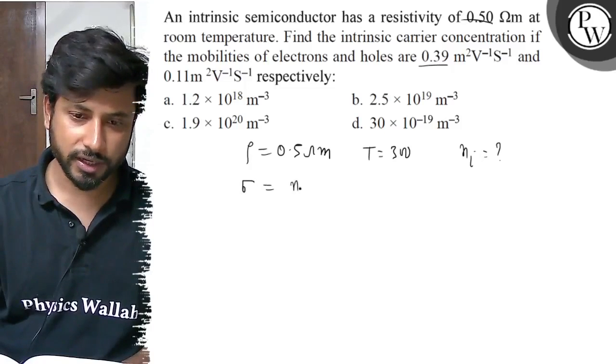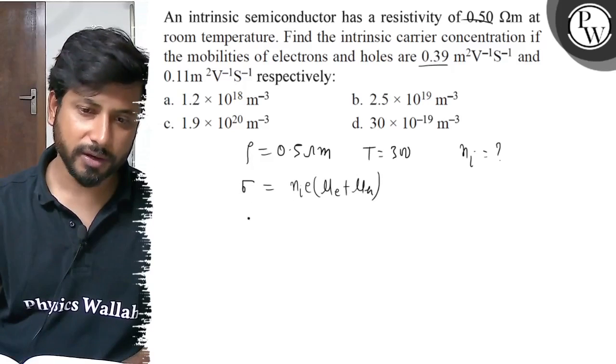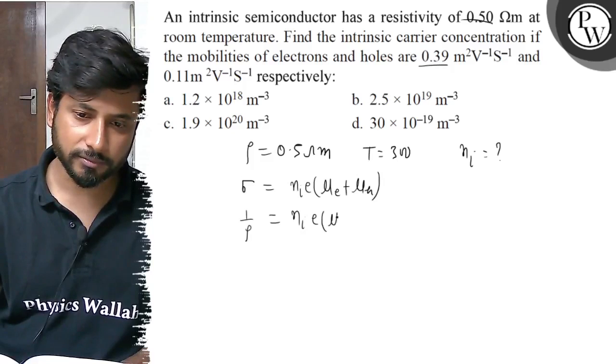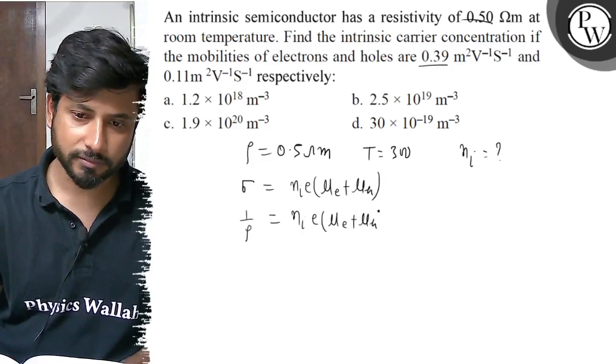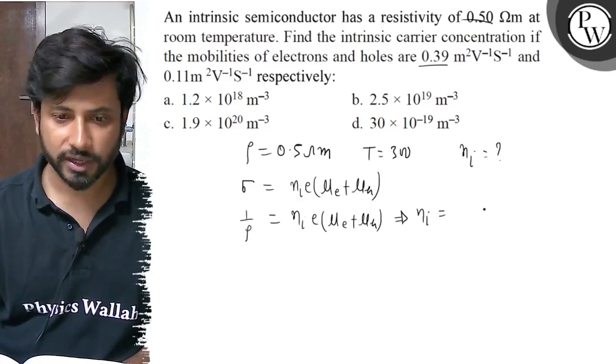So this sigma we can write 1/ρ equals to ni·e(μe + μh). Now we have intrinsic carrier concentration: ni = 1/(ρ·e(μe + μh)).